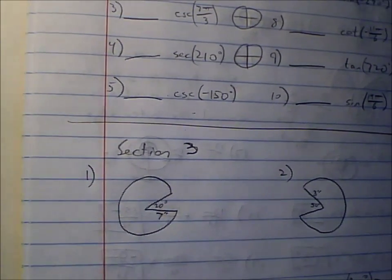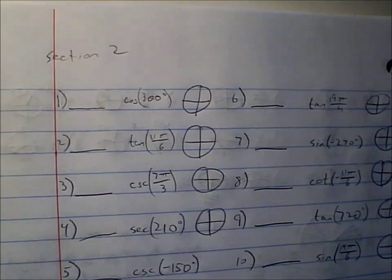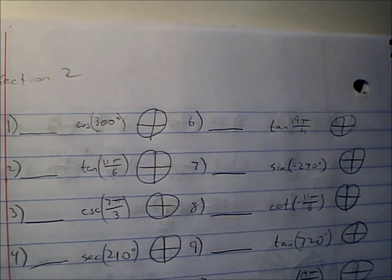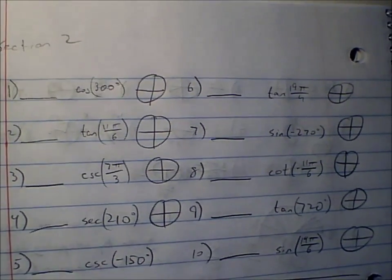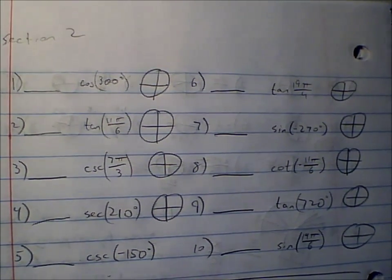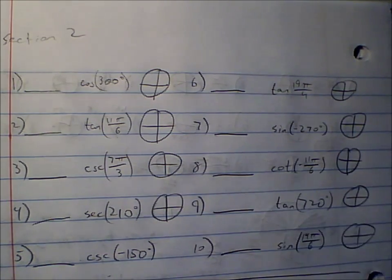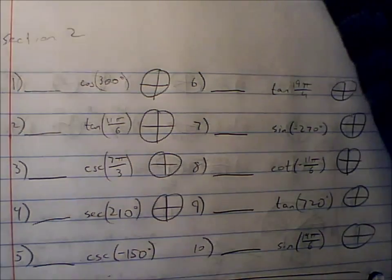This video will cover sections 2 and section 3 of trig test number 1. Let's start in section 2. Here we're just finding the value of sine, cosine, tangent, etc. for these different angles. My suggestion is: draw it first, then look for the sides of the triangle. If it's a triangle, look at the x and y values, and that will tell you what each value is going to be.